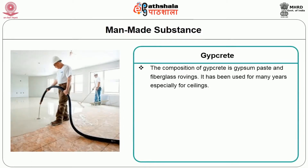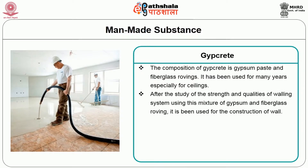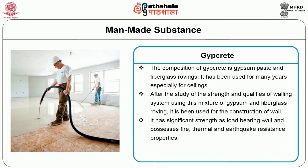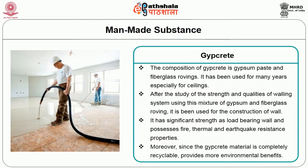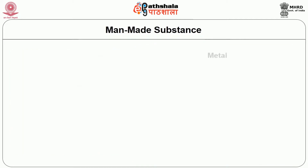Gypcrete: The composition of gypcrete is gypsum paste and fiberglass rovings. It has been used for many years, especially for ceilings. After study of the strength and quantities of the wall system using this mixture of gypsum and fiberglass roving, it has been used for wall construction. It has significant strength as a load-bearing wall and possesses fire, thermal and earthquake resistance properties. Moreover, since gypcrete material is completely recyclable, it provides more environmental benefits.